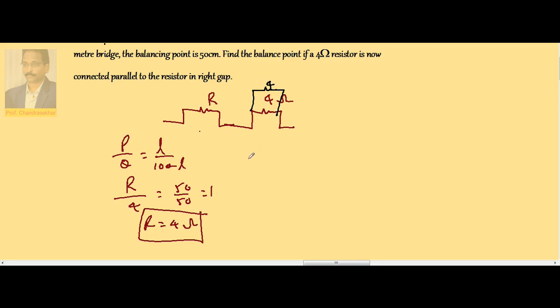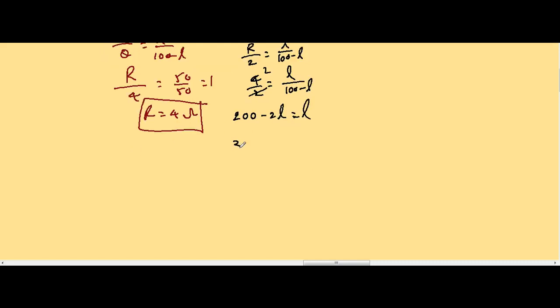Therefore, R by 2 equals L by 100 minus L. What is the R value? We already calculated 4. Therefore, 200 minus 2L equals L, or 3L equals 200. So L equals 200 by 3 centimeters.